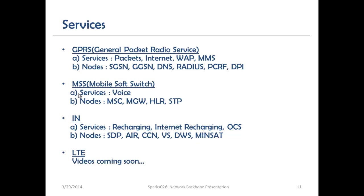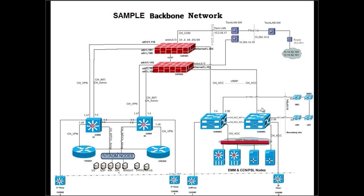We also have the MSS — Mobile Soft Switch — meant for voice, with network element nodes like the MSC, the Media Gateway (MGW), the HLR — Home Location Register — and the STP. These are all nodes that connect to the backbone in order to function properly. On the Intelligent Network side, we have the SDP, the CCN voucher server, and related nodes. An LTE video will be coming soon for that topic.